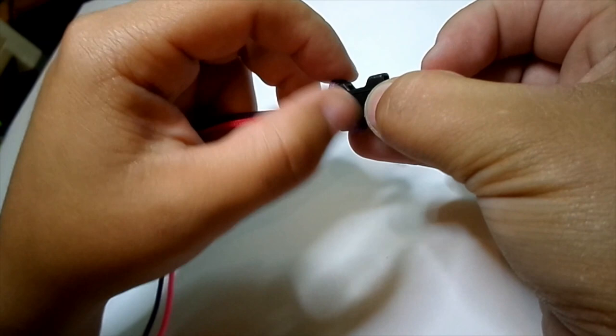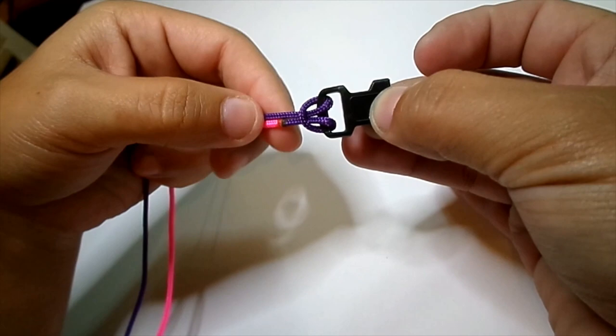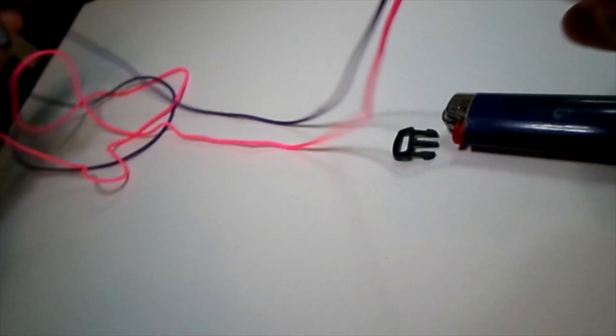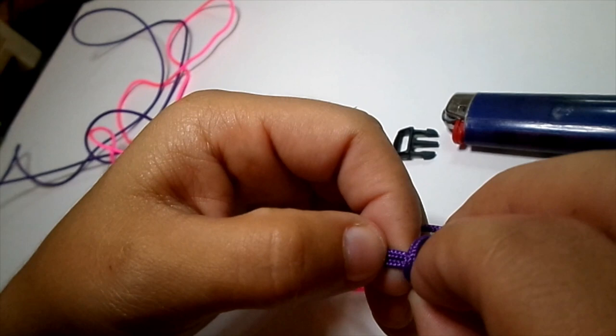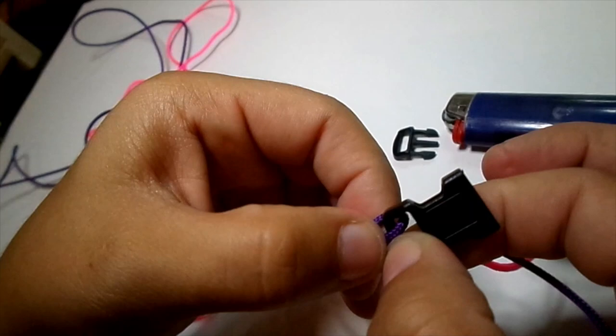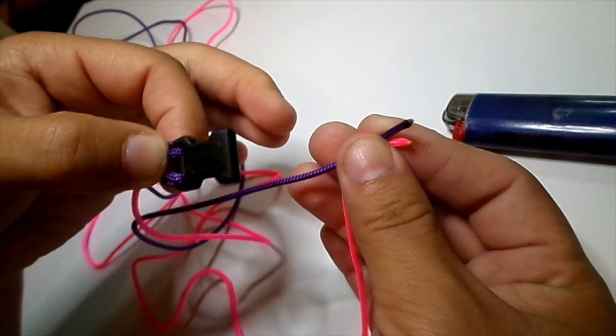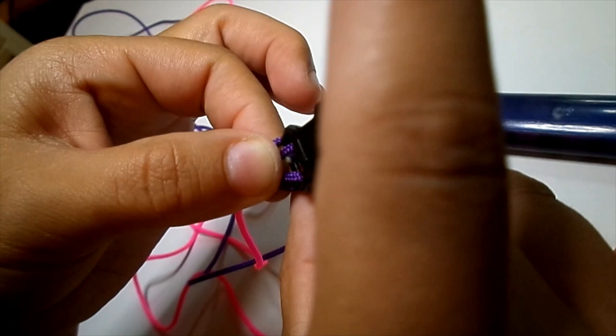And then you want to bring this down over, this is your basic cow's hitch. Now I'm gonna go ahead and take my ends and bring them back up through the center again so I can cover all of this space here. So you just want to go ahead and separate that, take your ends and bring them back up through this.